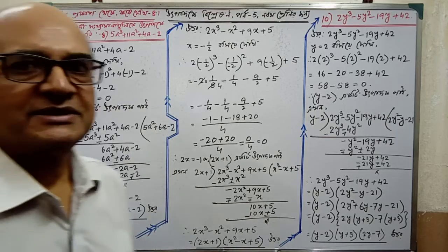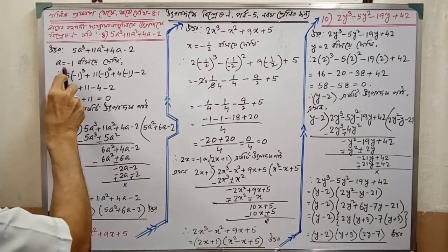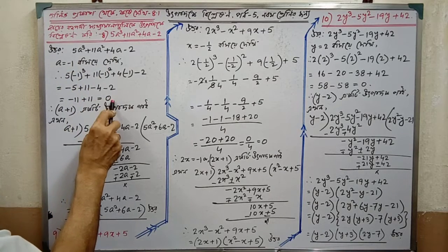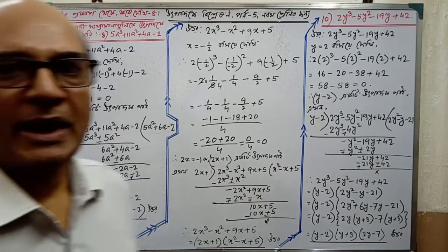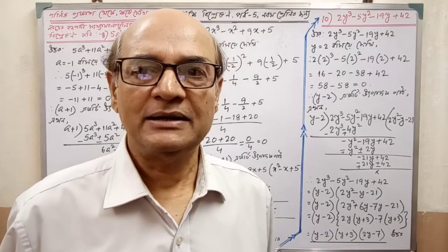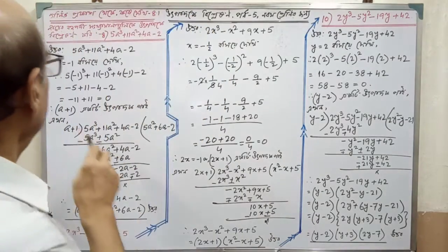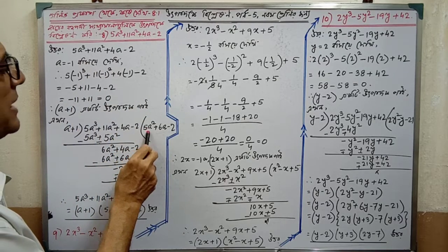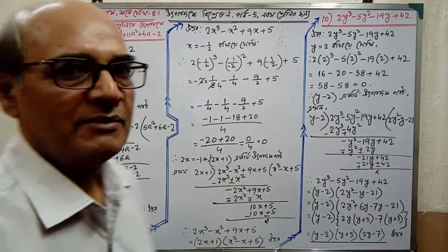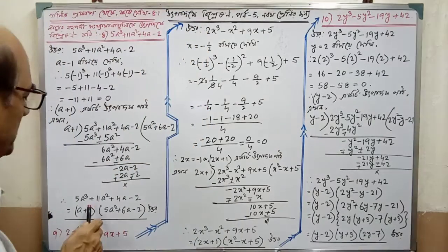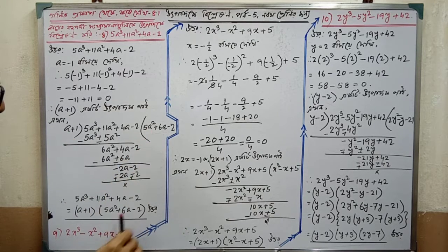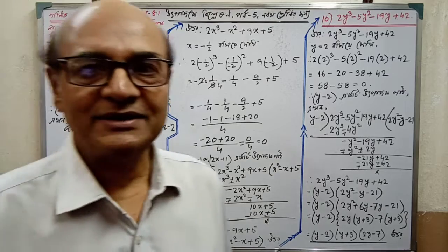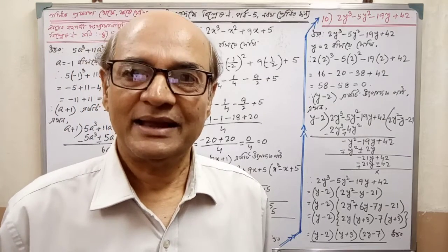Putting x equal to minus 1, the value of the expression becomes 0 minus 1 equal to minus 1 plus 1. We get the result for 5 squared plus 6 minus 2, which equals 1 plus 1. The expression is factorized, and this is the answer.